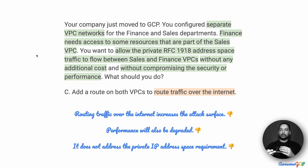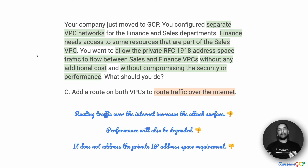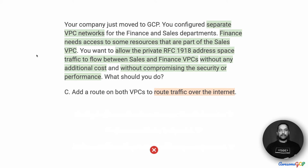When we route traffic over the public internet, you're going to have to have an external IP address, and therefore that is not an acceptable solution for this requirement. Option C is therefore out for us.